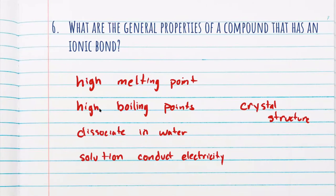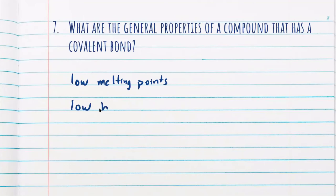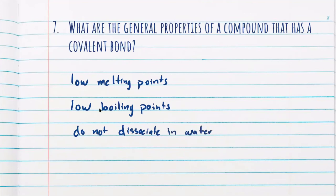One of the more clear properties of an ionic bond is that they're able to form what is called a crystal structure or crystal lattice. Covalent bonds are quite the opposite — they have low melting points, and their solutions do not conduct electricity.